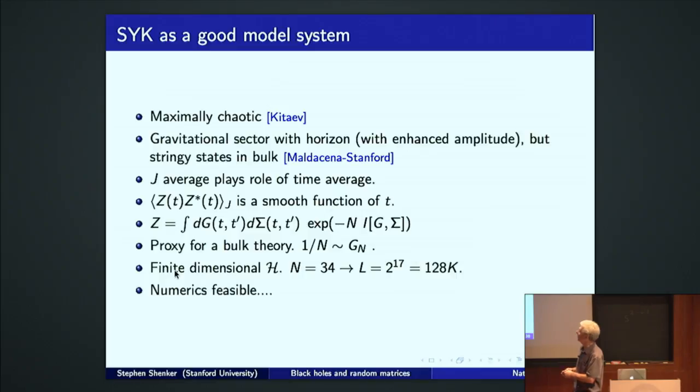Why is the SYK model potentially a good model to analyze this? Well, as we've seen, it's maximally chaotic. By that I mean it saturates the chaos bound by this criterion of the out of time order correlator. It has, in some sense, some kind of bulk interpretation. There seems to be a gravitational sector, this dilettante gravity. It's got, that part has enhanced amplitude. It has stringy states. I should have put stringy in quotes. We don't really know what they are. And it has other stuff, these non-singlet fields.